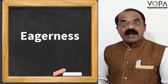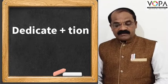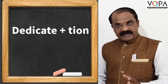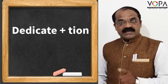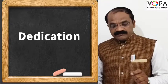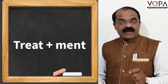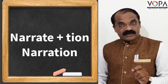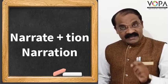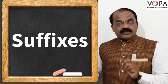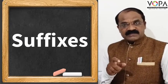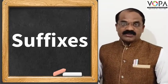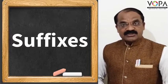On page number 72 there are some exercises. For 'dedication' — 'dedicate' is the main word; if you add '-tion' you get 'dedication.' For 'treatment' — 'treat' is the main word; if we add '-ment' we get 'treatment.' For 'narration' — 'narrate' is the main word; if we add '-tion' we get 'narration.' So when we add all these suffixes, we automatically get noun-forming words.